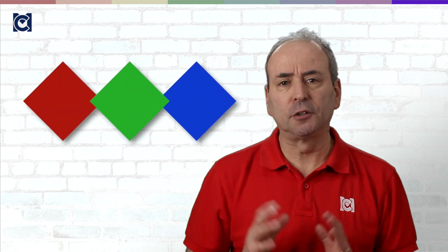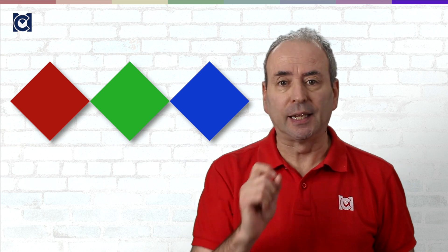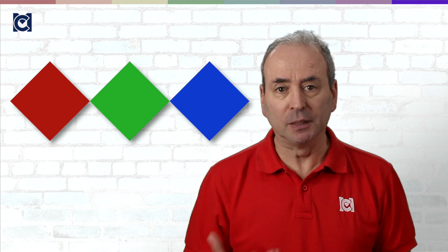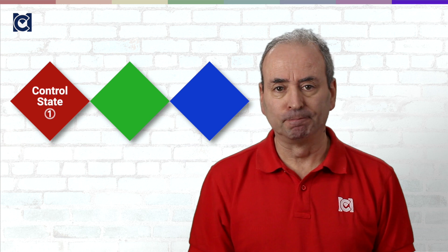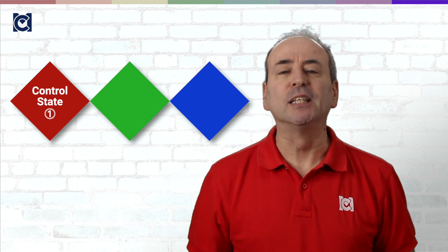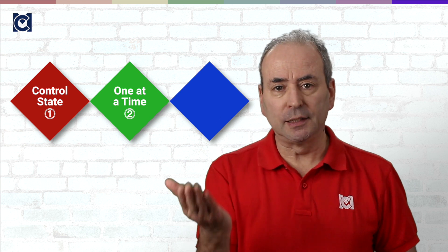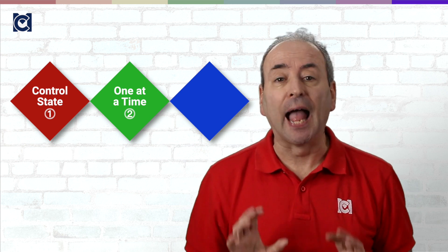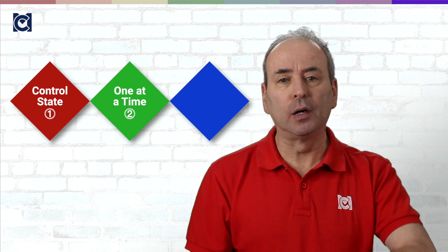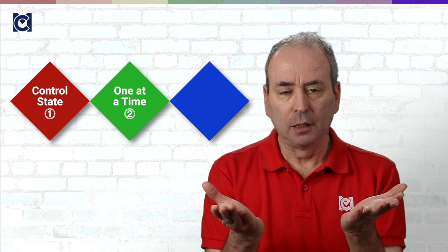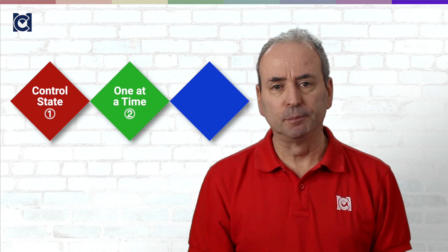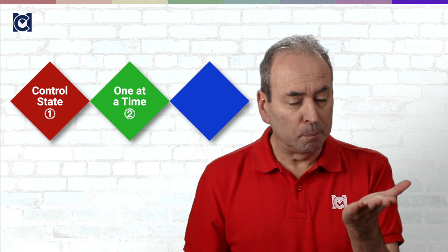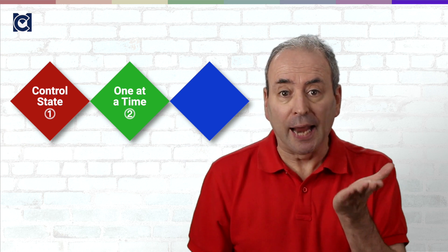A-B testing has three conventions. The first is that one of the versions you use is the current version against which you measure potential variations — this is what scientists would call the control state. Second, we like to test one thing at a time. If I change the colour of the button and I change the headline on the page and I get more clicks in one version than the other, how do I know whether it's the button colour or the headline which makes a difference? And if it was the button that made the difference, did changing the headline help even more?